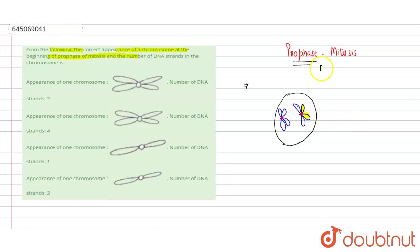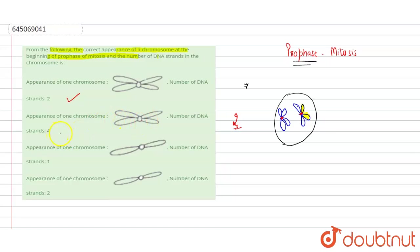After further stages — metaphase and anaphase — will come, but here just condensation of chromosomes has occurred. The total number of DNA strands is two. If we see option one, the appearance is the same and the number of DNA strands is two, so this is the correct option.